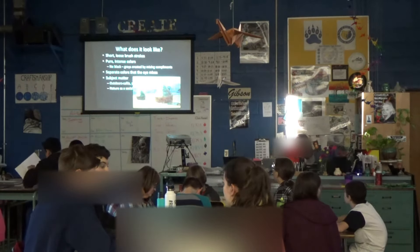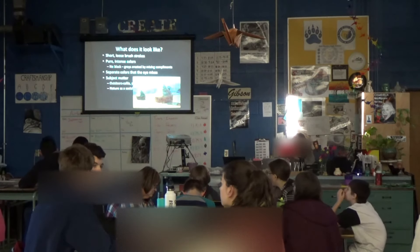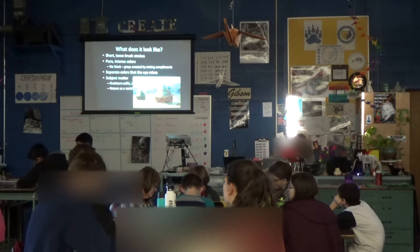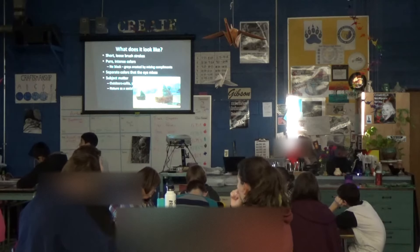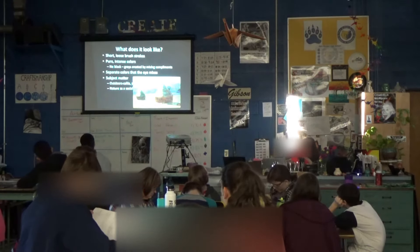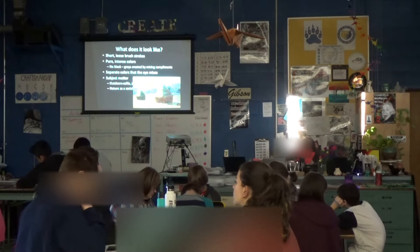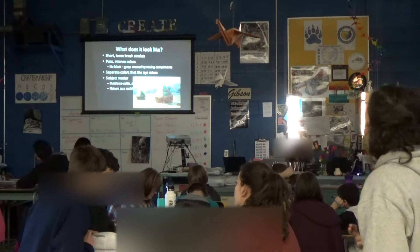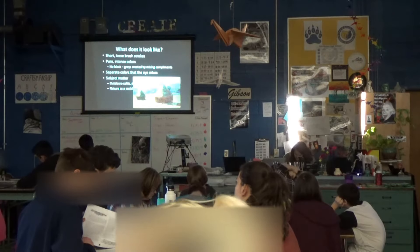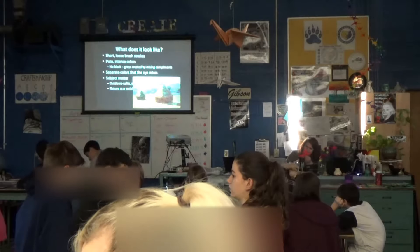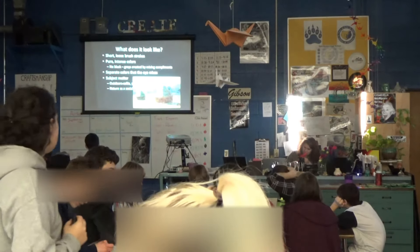Characteristics of Impressionism include short, loose brush strokes and pure, intense colors. Instead of mixing values like dark green and light green, they would just use green — laying different colors next to each other so that your eye mixes them. They won't use much black, since there's not a lot of black in nature; instead they combine colors to make very dark values. Subject matter is typically outside: cafes, parties, parks, and landscapes, but usually with some hint of human life. Haystacks don't make themselves — there is always evidence of people. Nature as a social experience. We still see atmospheric perspective and haziness in the background, heavy shadows, and a concentration on the lighting of the moment.